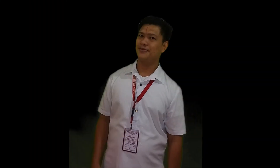Now let us test how much you have learned by answering the following activity. I will be giving effects of rotation and revolution, and you need to identify if each occurs due to rotation or revolution. Write your answers on a piece of paper. After answering, take a picture of your answers and PM it to me via Messenger. Are you ready? Let's begin!